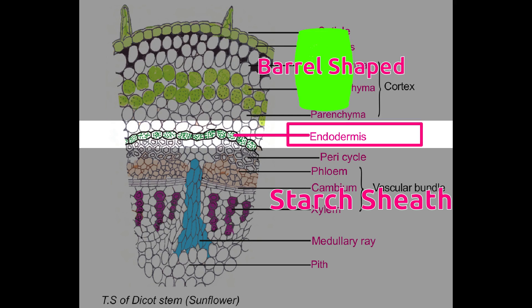Endodermis is barrel-shaped cells. These cells do not allow any soluble in water to enter inside and thus act as a sheath for food stored inside. This is also known as starch sheath.